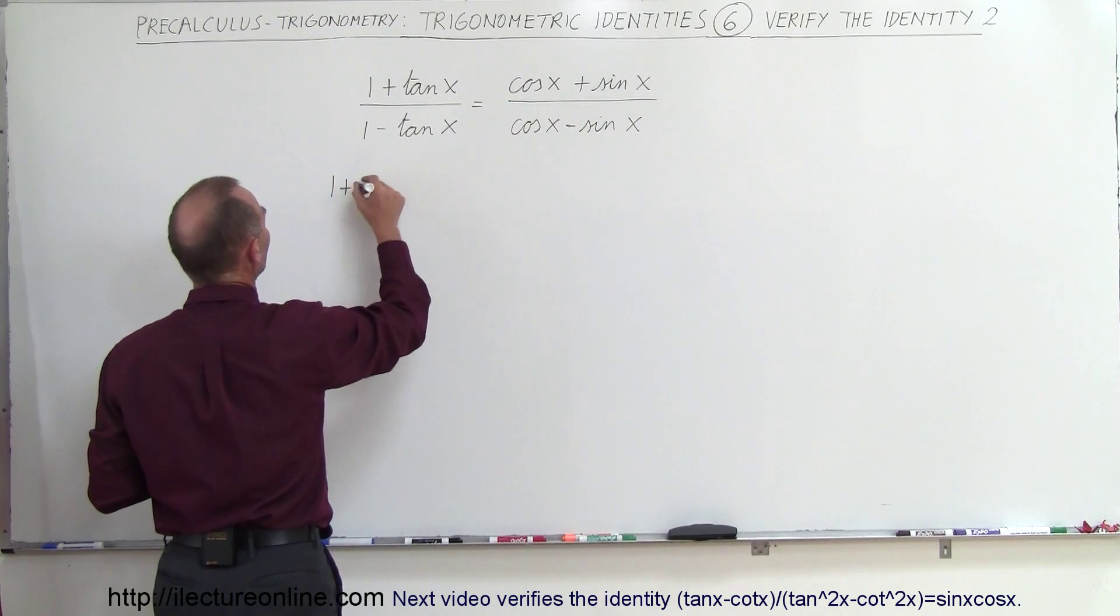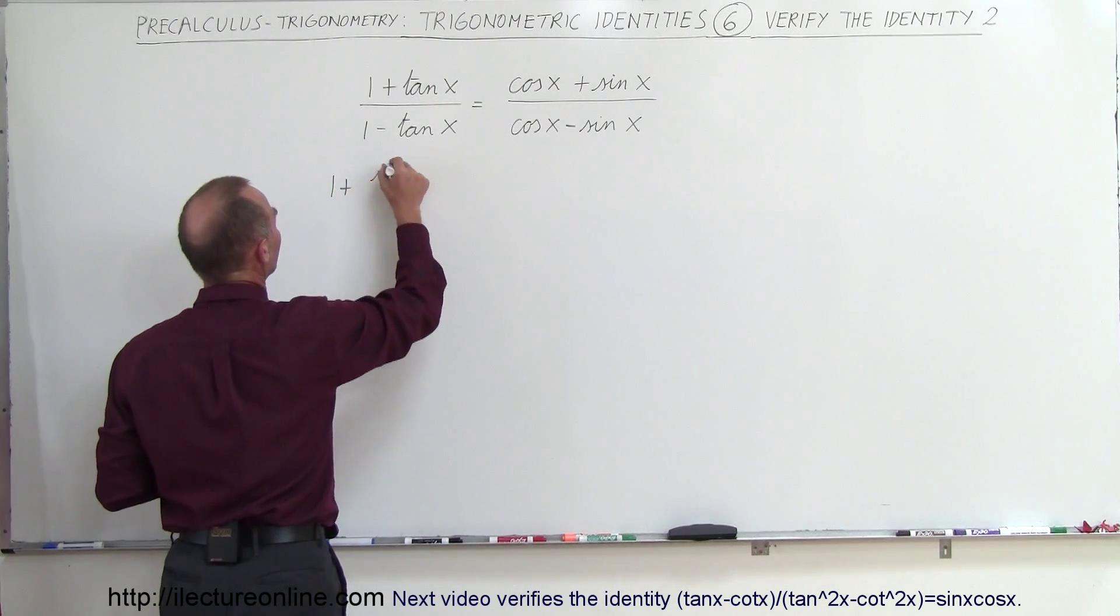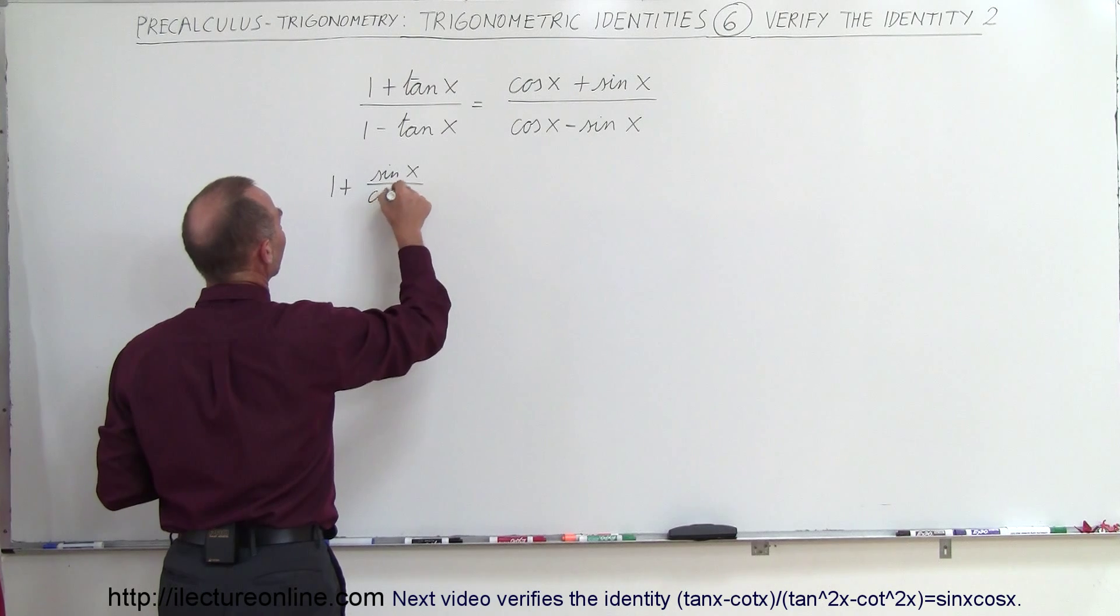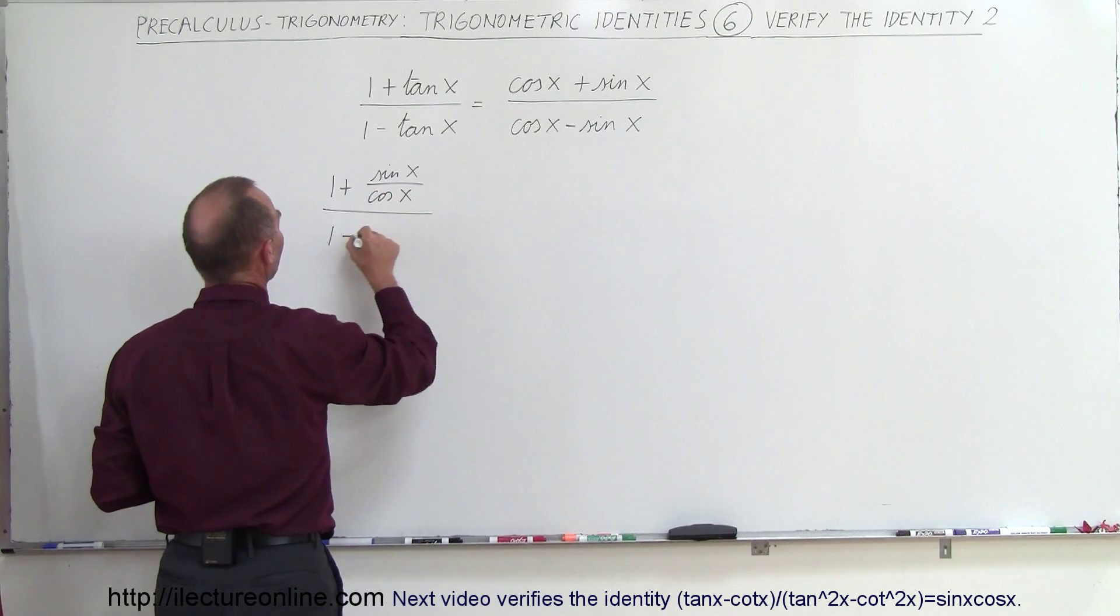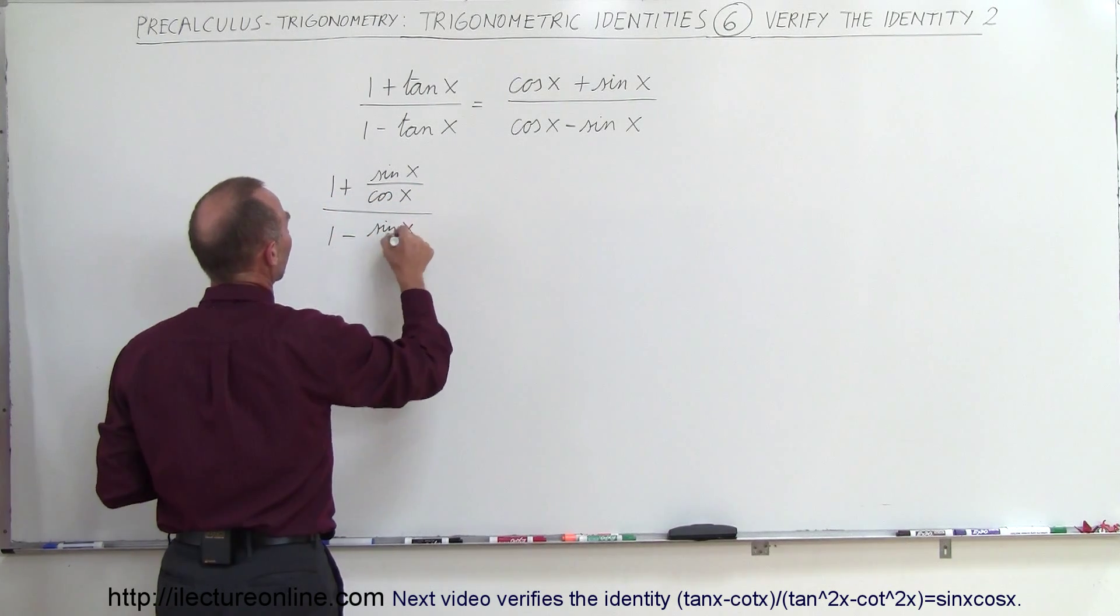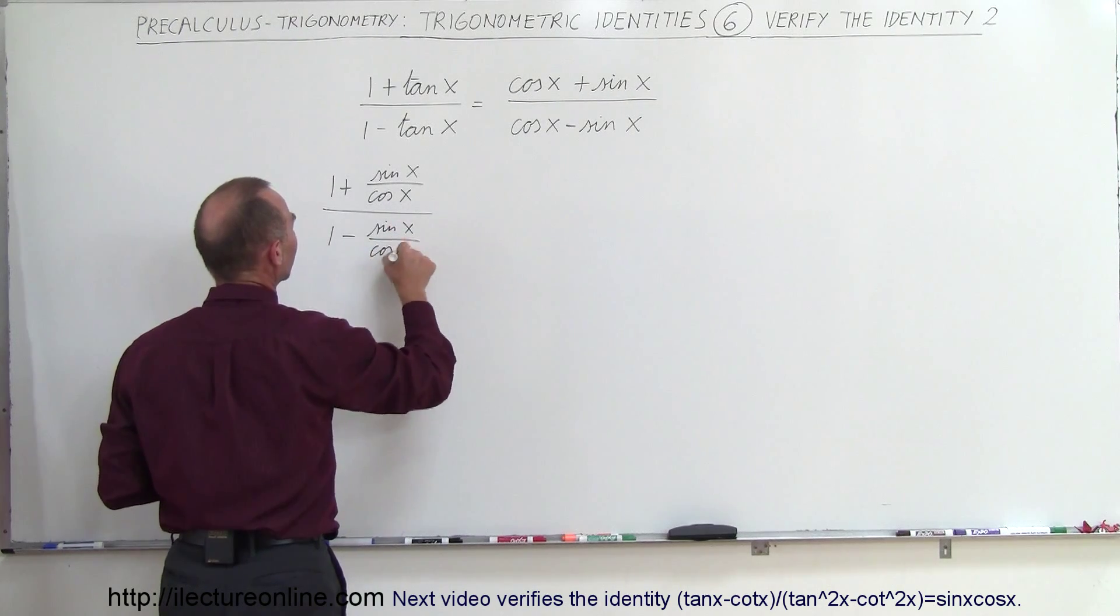So this can be written as 1 plus the sine of x over the cosine of x divided by 1 minus the sine of x divided by the cosine of x.